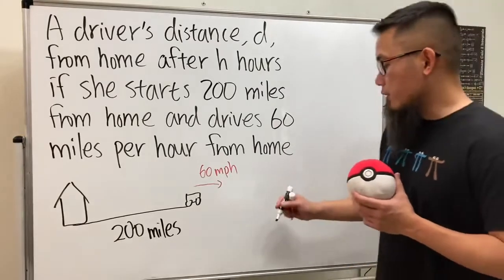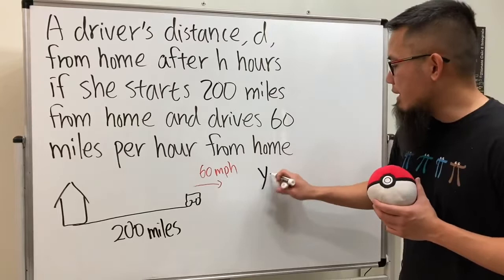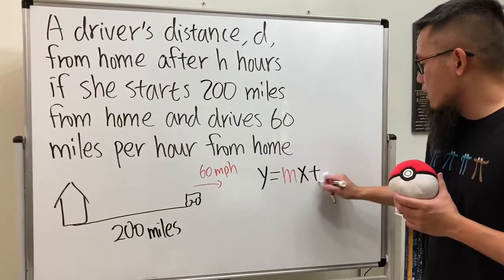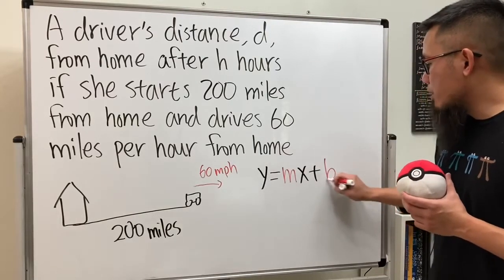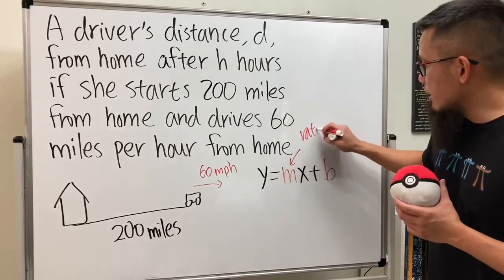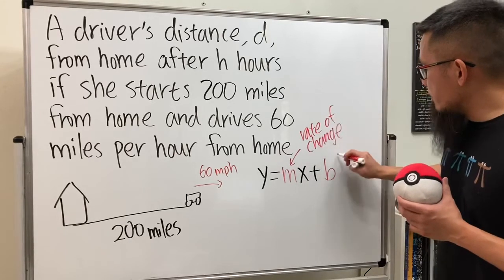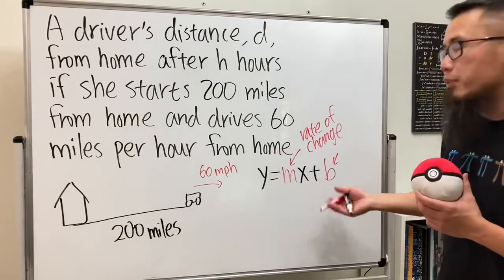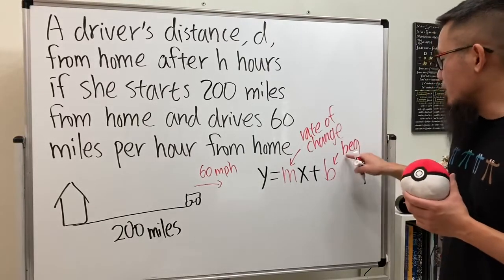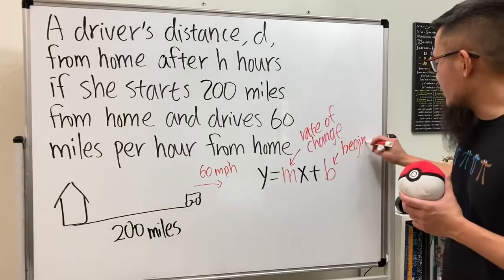Whenever we are writing a linear equation we will have y = mx + b. Remember, m is the slope, which is the rate of change, and b is the y-intercept, which is the starting value or beginning value — b stands for beginning — so it's the initial or starting value.